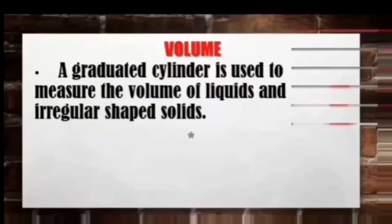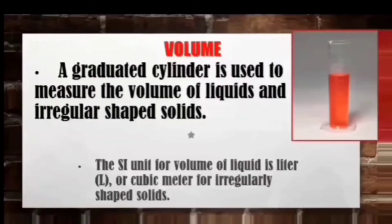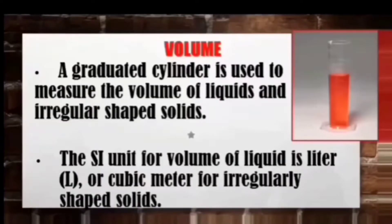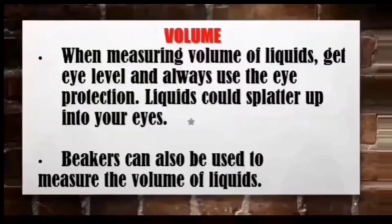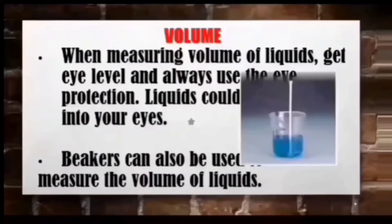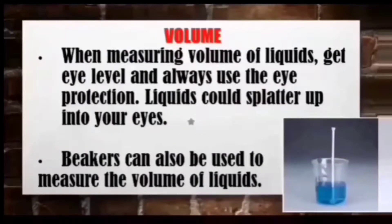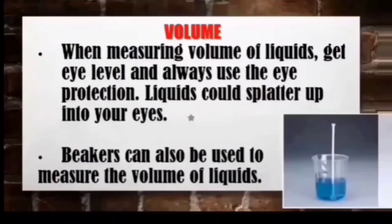Number six: volume. A graduated cylinder is used to measure the volume of liquids and irregularly shaped solids. Liter is the standard unit of volume for liquid, and cubic meter for irregularly shaped solids. When measuring the volume of liquids, get to eye level and always use eye protection, as liquids could splatter up into your eyes. Beakers can also be used to measure the volume of liquids.